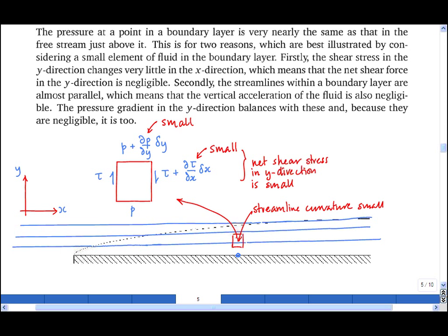The pressure on the surface is the same as the pressure at the edge of the boundary layer. So this pressure, p, is also equal to this pressure, p.